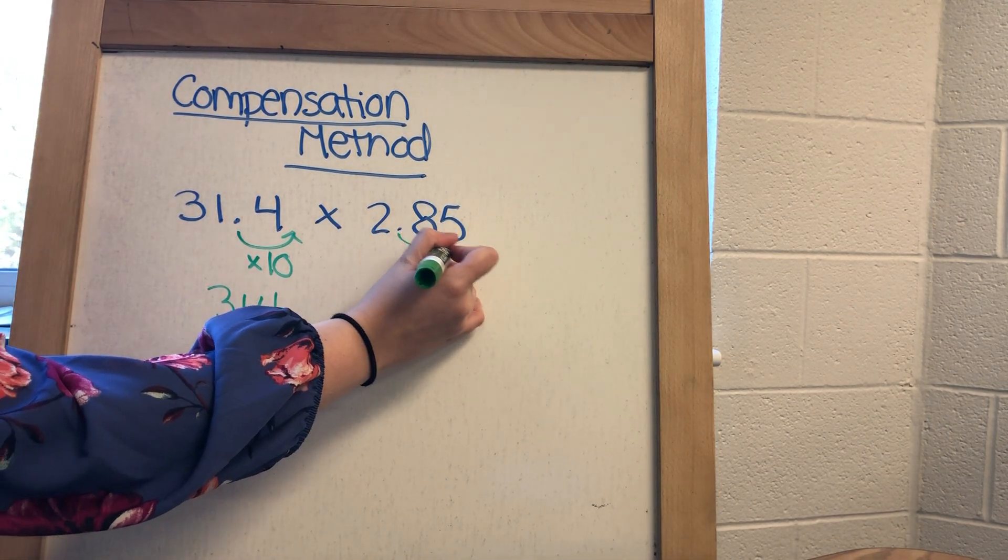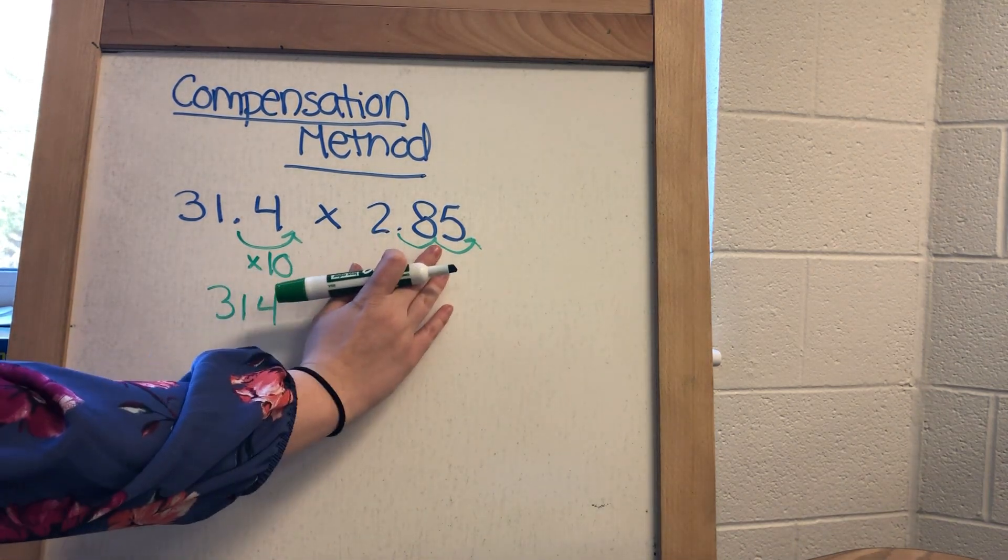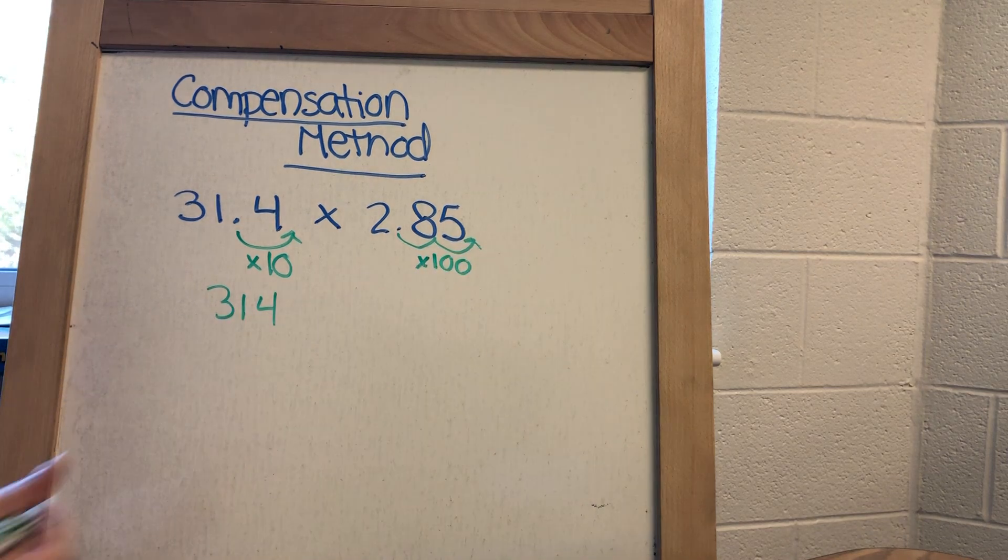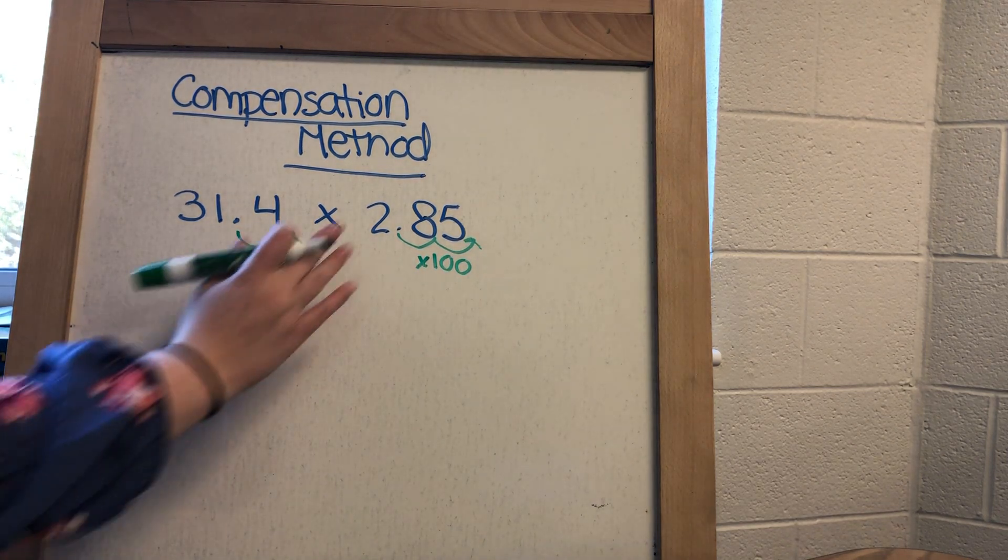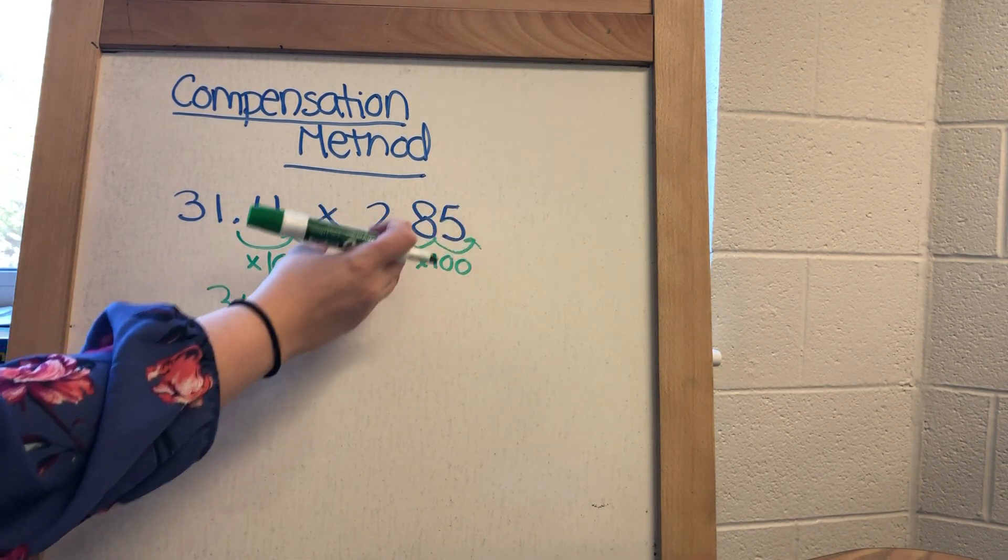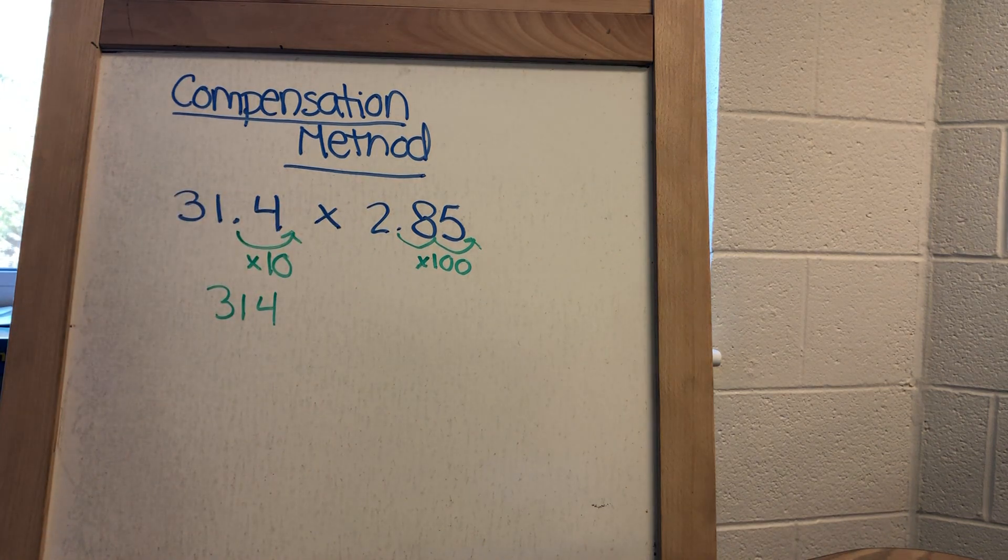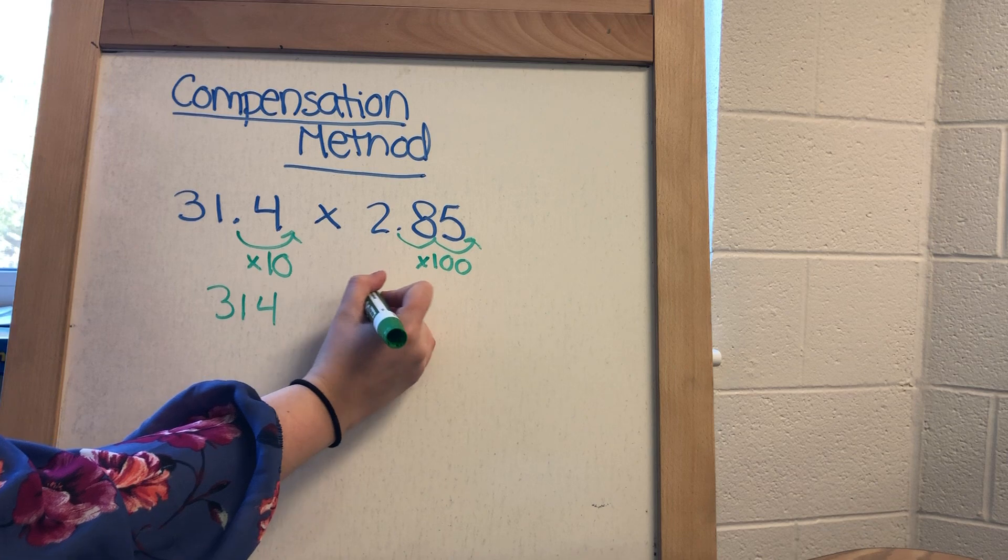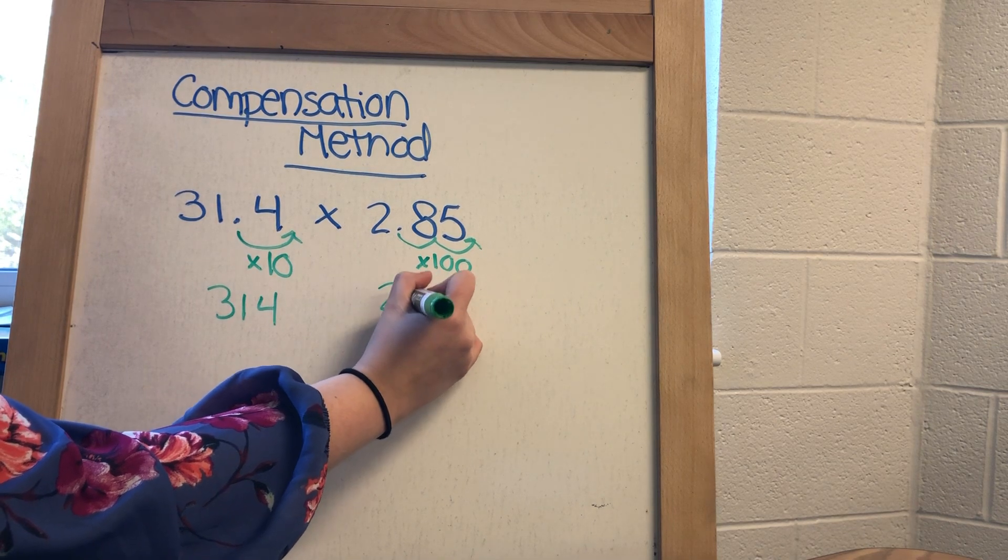In order to get this number to be a whole number, I have to make two jumps or multiply by 100. When I multiply by 100, my numbers will shift two place value spots and my decimal will end up being behind the 5. So this will turn into 285.